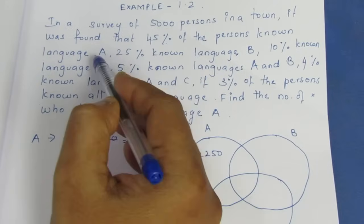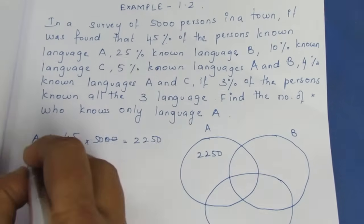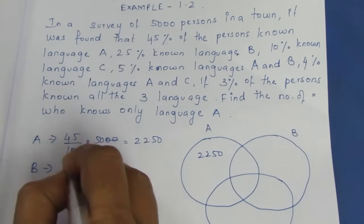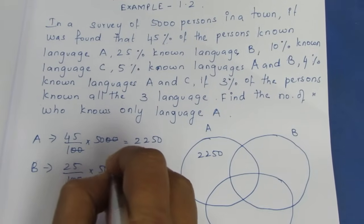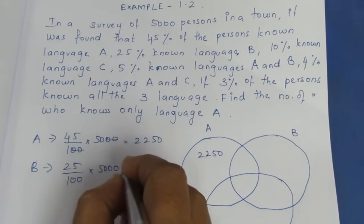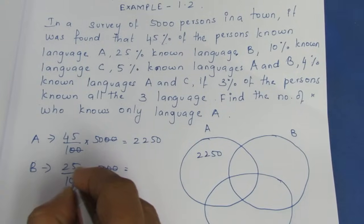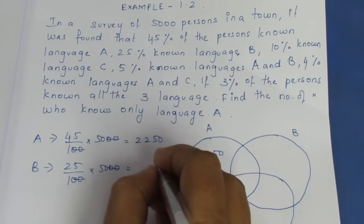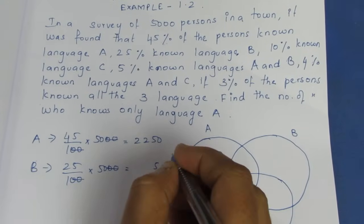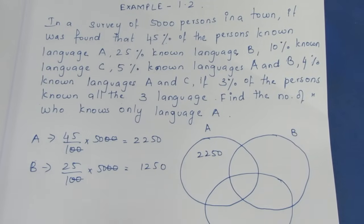Next, B is 25%. So B is 25 divided by 100 into 5000. Cancelling 20 and 20, we get 25 multiplied by 50. So B is 1250.